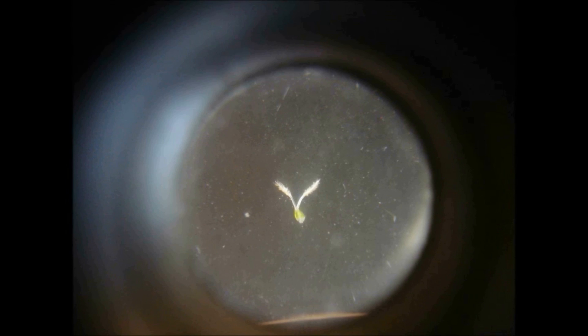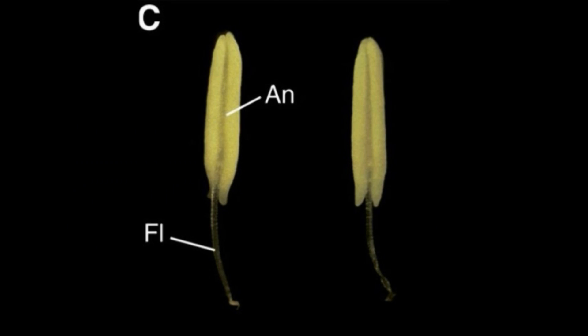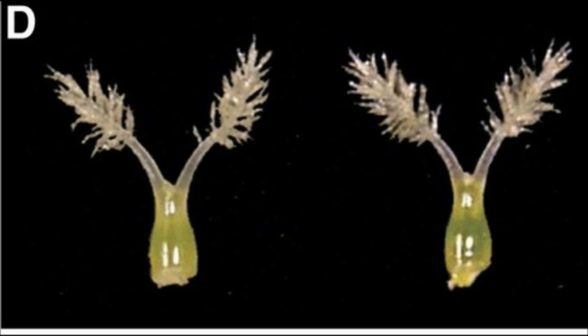The pistil contains the ovary, which produces the egg nucleus. In the stamen, the enlarged top portion is known as the anther. The thin, stalk-like structure is the filament that supports the anther. In the pistil, the top portion is the stigma, the middle portion is the style, and the bottom portion is the ovary.